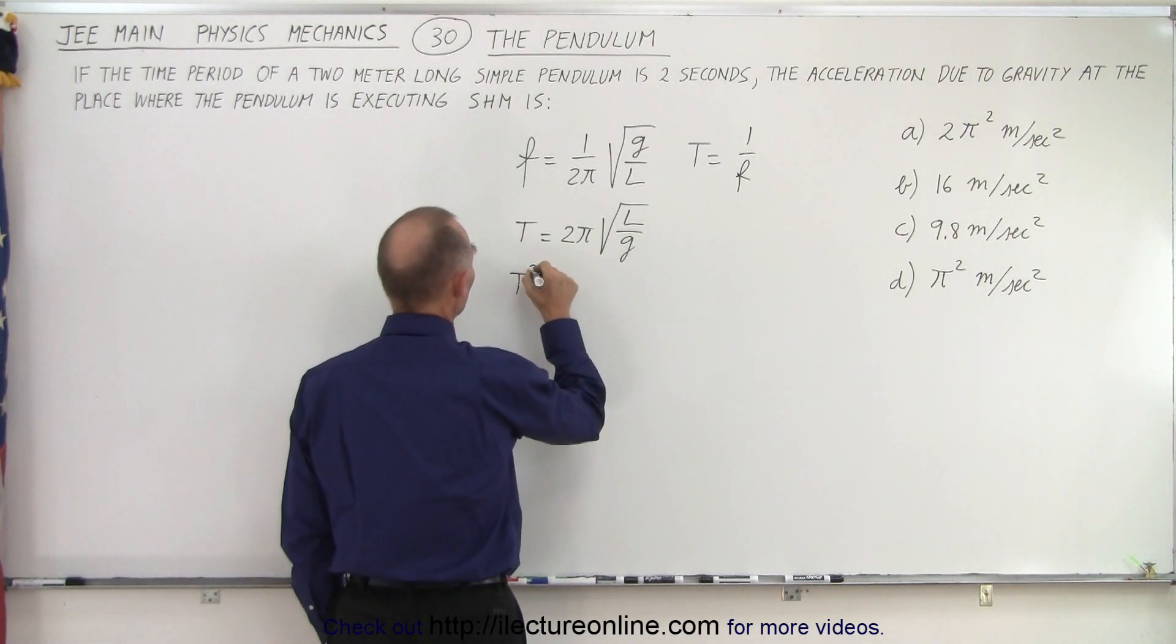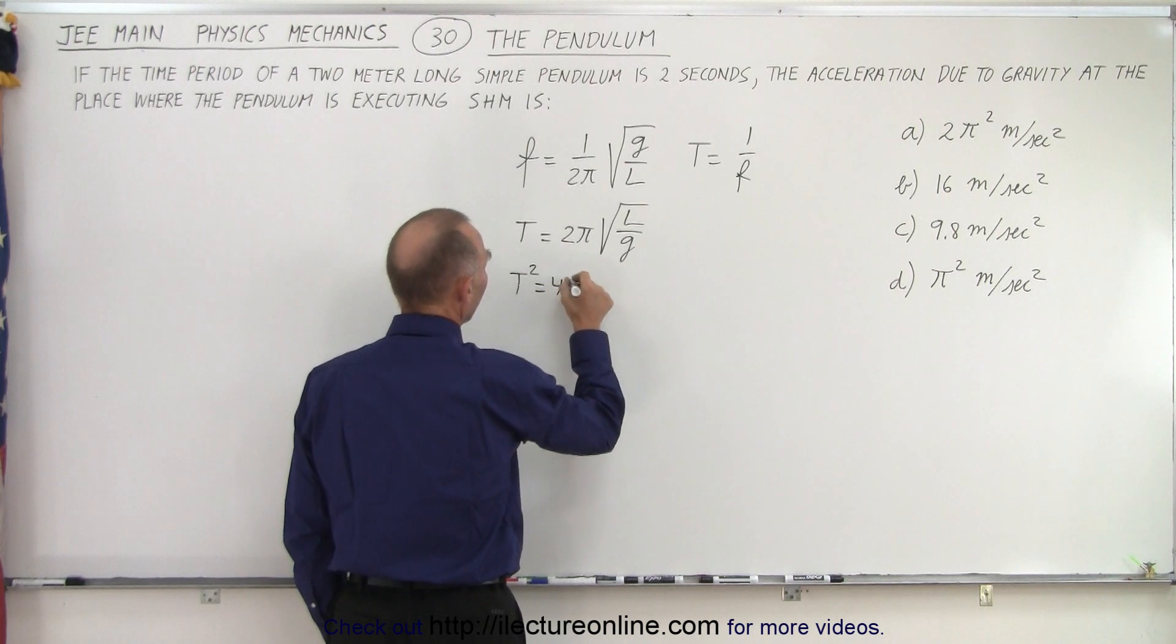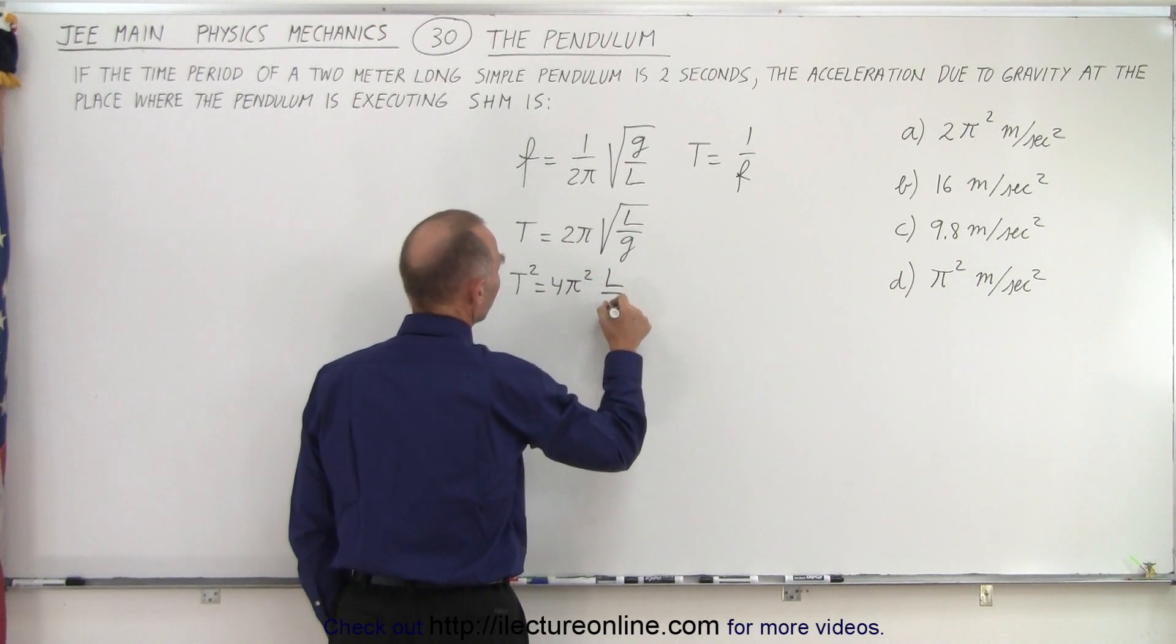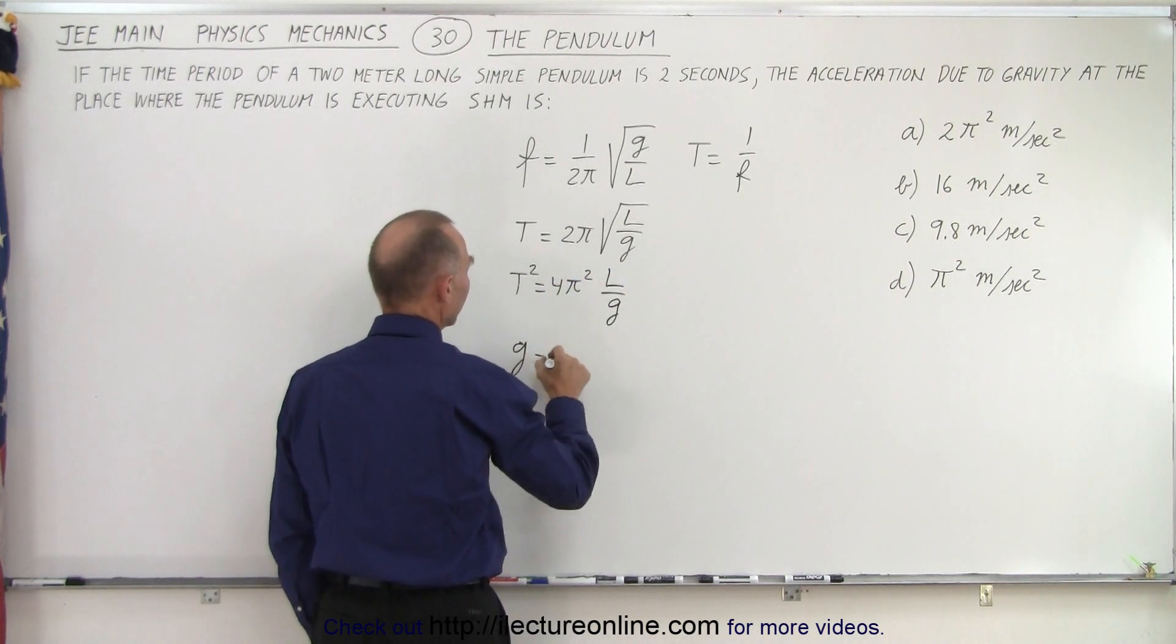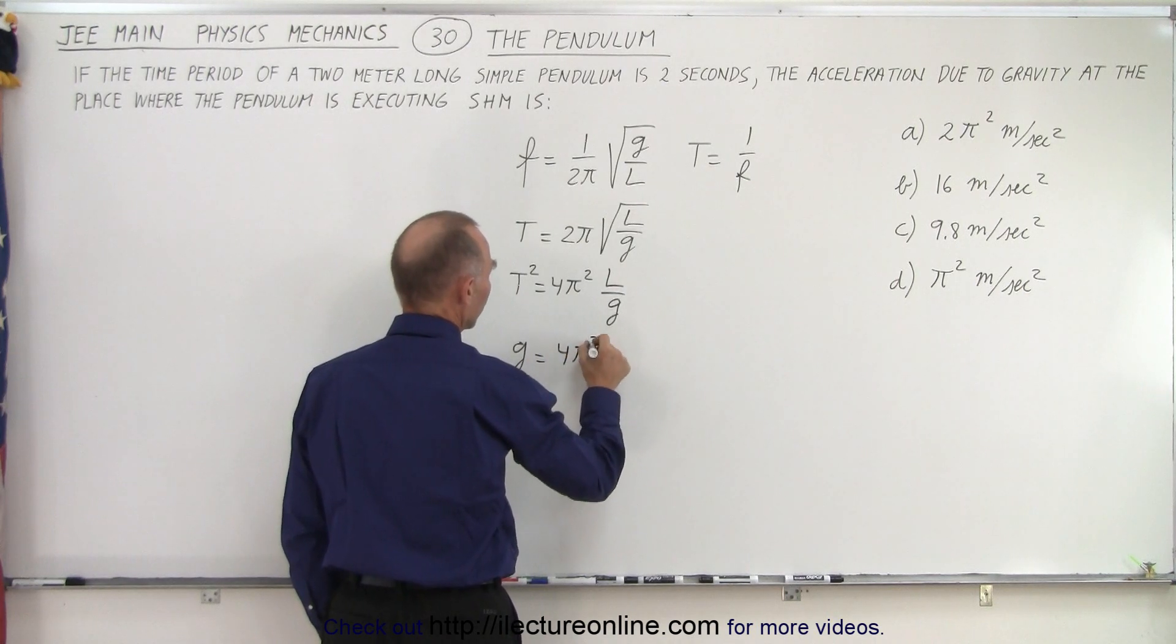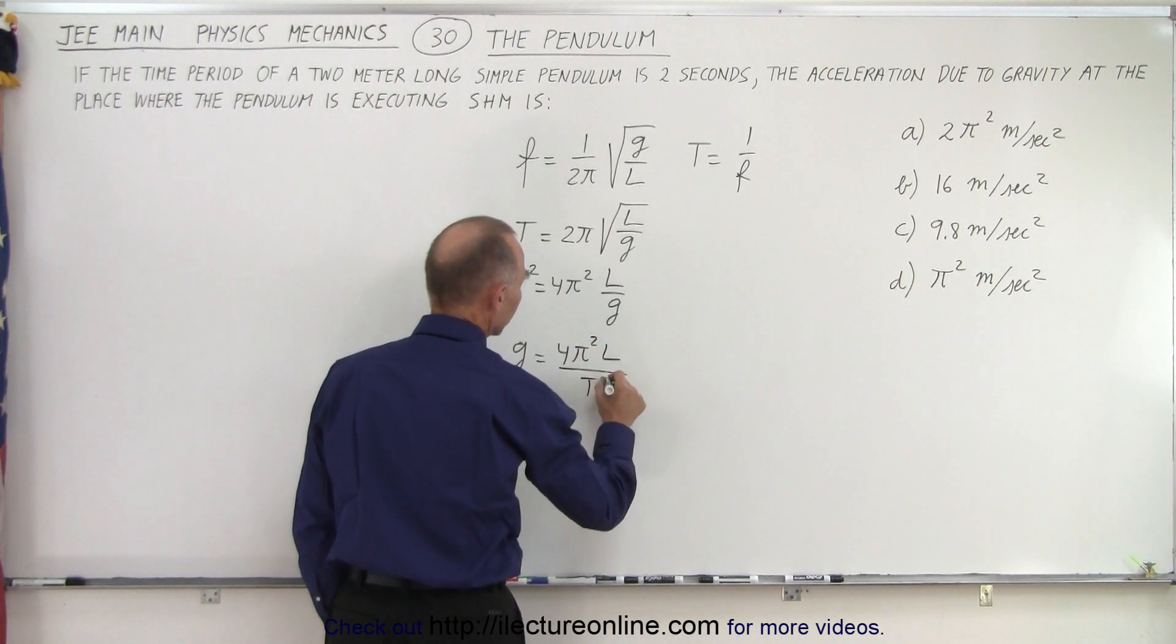So we square both sides. T² equals 4π² times l over g, or g is equal to 4π²l over the period squared.